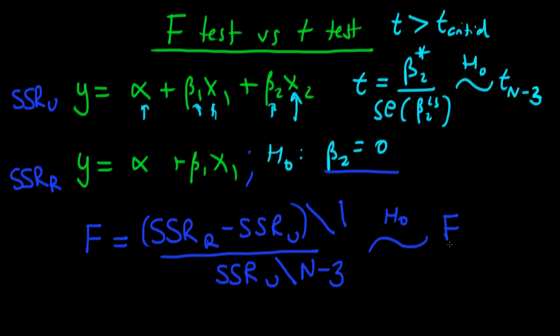We know under the null hypothesis, this is distributed like an F, with 1 degrees of freedom for its first input, and n minus 3 degrees of freedom for its second input.